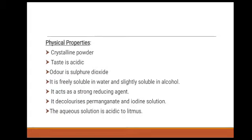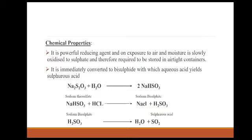Physical properties: crystalline powder with an acidic taste and odor of sulfur dioxide; freely soluble in water and slightly soluble in alcohol. It acts as a strong reducing agent, decolorizes permanganate and iodine solution, and its aqueous solution is acidic to litmus. Chemical properties: it is a powerful reducing agent; on exposure to air and moisture it is slowly oxidized to sulfate and therefore requires storage in airtight containers. It is immediately converted to bisulfite in aqueous acid, giving sulfurous acid.